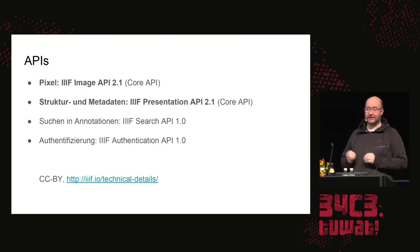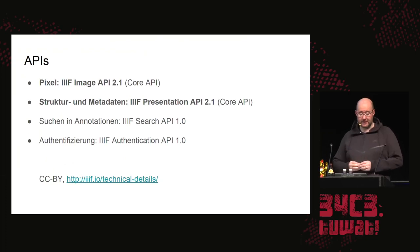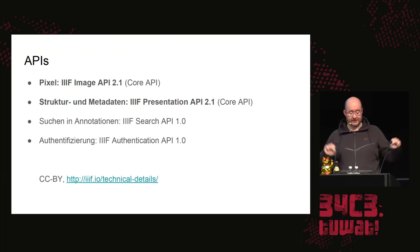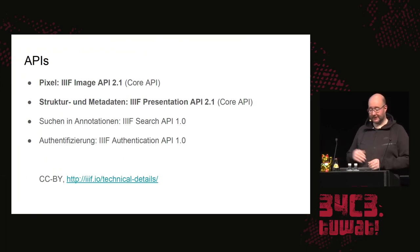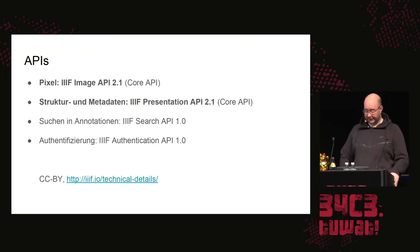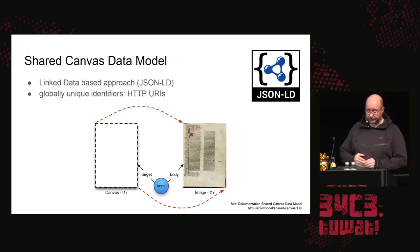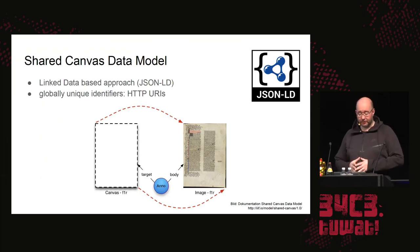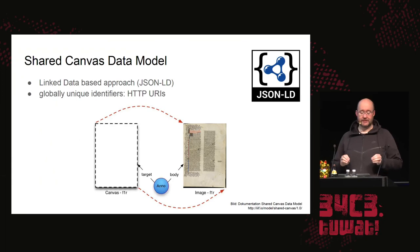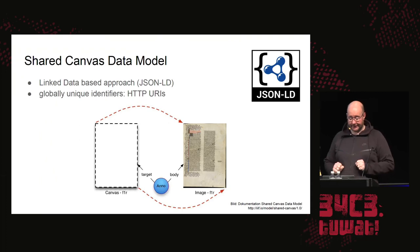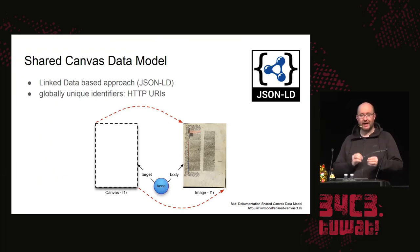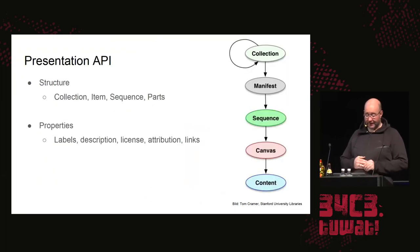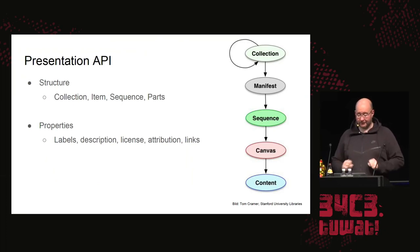There are four APIs right now, licensed under CC BY license. Two of them are necessary to enable a presentation: the Image API that delivers the pixels themselves, and the Presentation API that provides the structure and metadata for these pixels and makes them available in an interoperable way. Other APIs are concerned with search and authentication. The data is stored in JSON format and the identifiers are usually HTTP URIs, which allows us to link different sources no matter how they're saved.